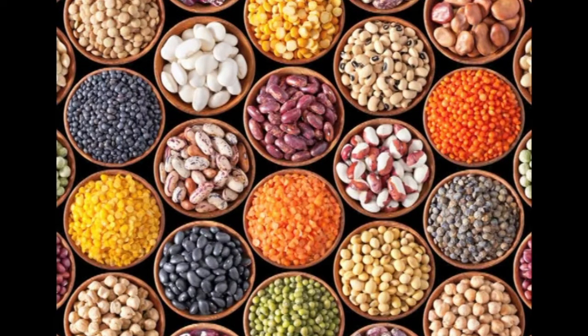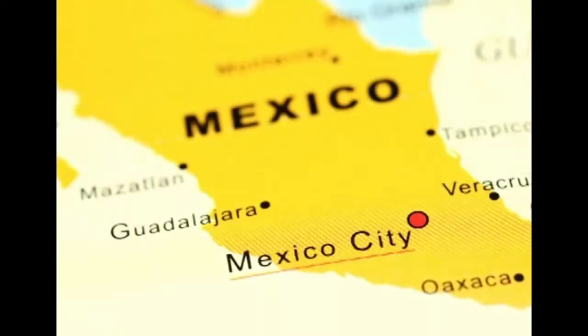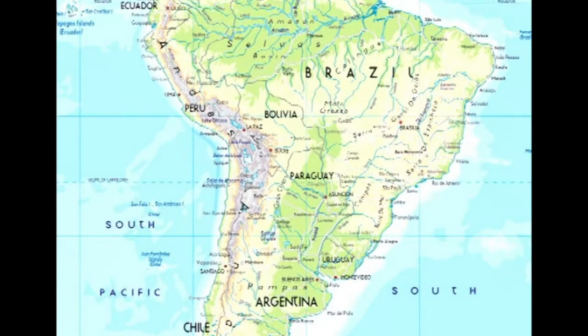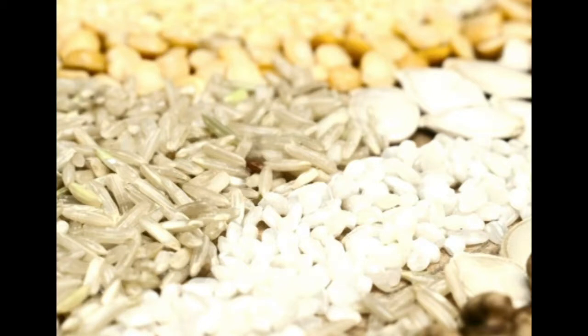Legumes contribute very important proteins in the diet of people across the world. When compared with animal protein, their cost is much less. Legumes are popular in Asian countries, Mexico, Argentina, South American countries and the Middle East, while consumption in Western countries is comparatively low. They provide carbohydrates and total energy similar to that of cereals — around 340 kilocalories per 100 grams.